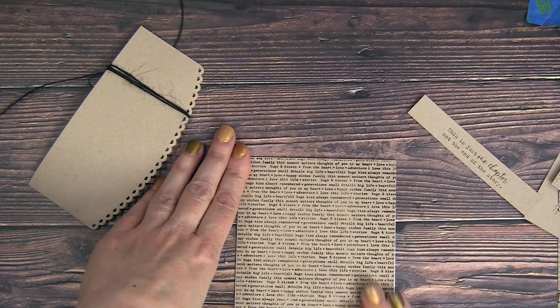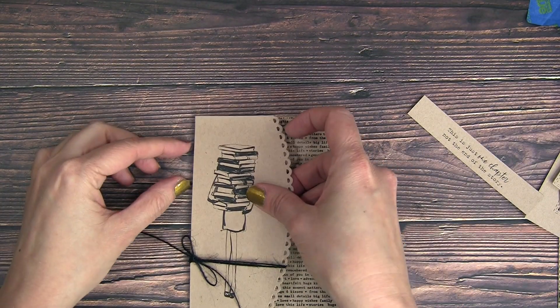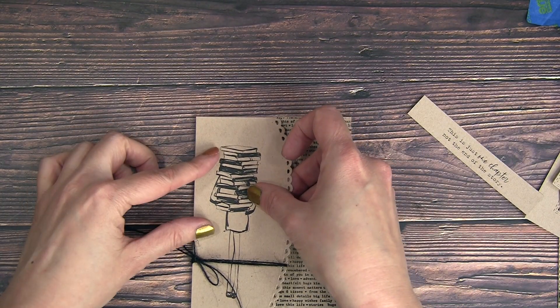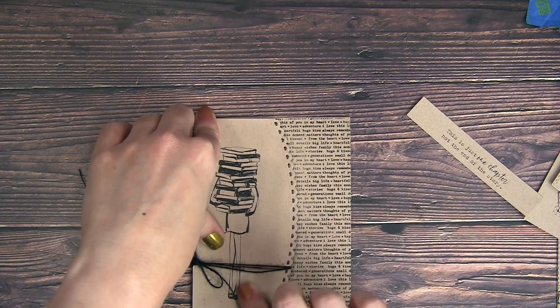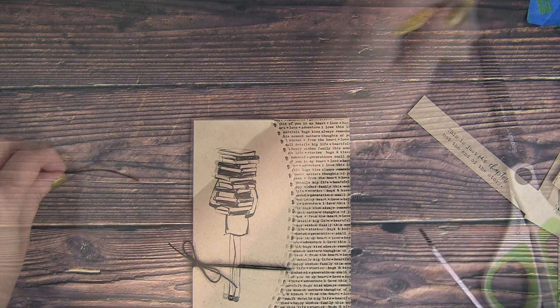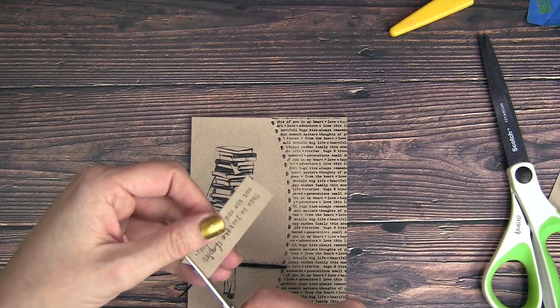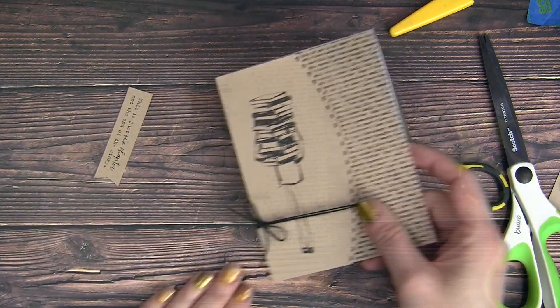Now I'm just going to cover my card base with that stamped background. I just love the bookish look of this. I just thought it matched the theme of the books and the girl so well. I'm just going to pop her up with some foam adhesive, and then I have my sentiment already stamped on a strip of craft cardstock as well.